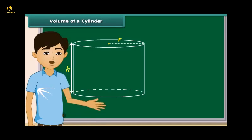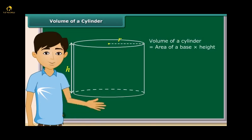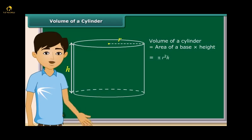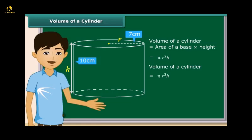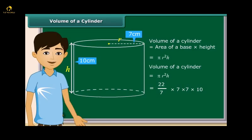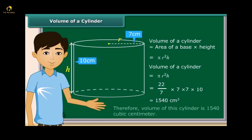Now we will calculate the volume of a cylinder, which has radius R and height H. For calculating the volume, we multiply the area of the base by the height. So the volume of a cylinder is equal to pi R square H. For example, a closed right circular cylinder with radius 7 cm and height 10 cm: volume = 22/7 × 7 × 7 × 10 = 1540 cubic centimetres.